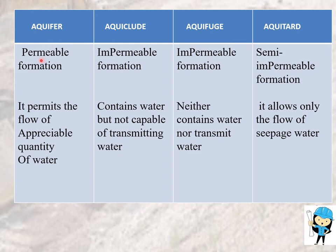Aquifer means it is a permeable formation — it can allow water to pass through and it contains water. Aquiclude means it contains water but cannot allow water to pass through, like clay material. Aquifuge means it cannot contain water and cannot transmit water. Aquitard means it is a semi-permeable formation where only seepage of water occurs; it does not contain water.